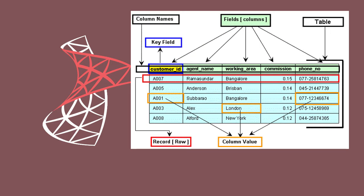In a relational database, a table organizes the information about a single topic into rows and columns. For example, a database for a business world typically contains a table for customer information. We should store customer account numbers, addresses, phone numbers and so on as a series of columns.